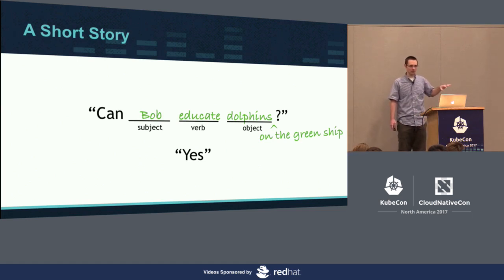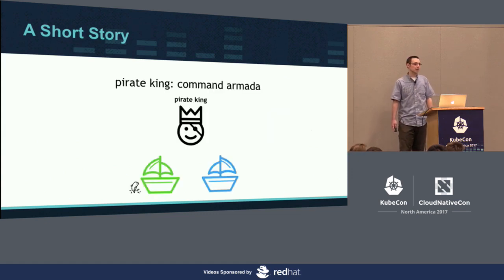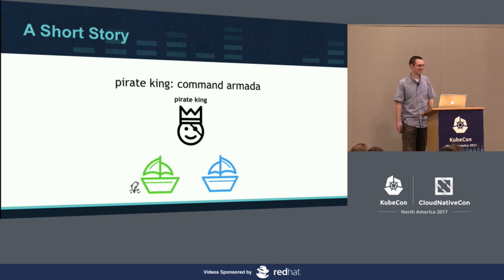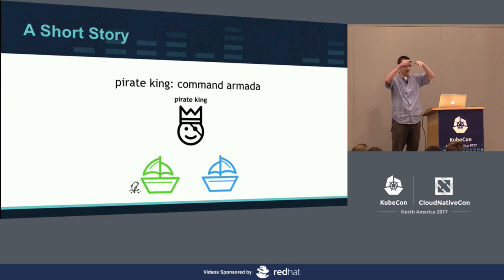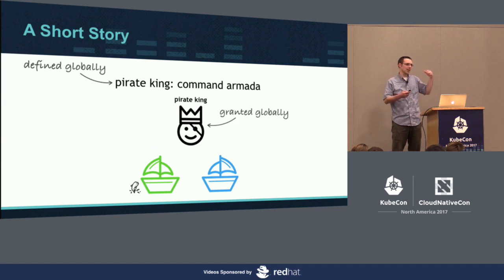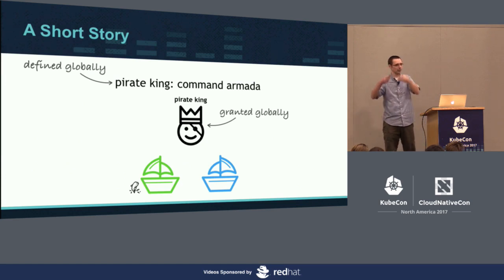We're almost done with our story, just a little post-log. Whatever happened to Bob? Turns out he got himself elected pirate king — must have been his strong sense of porpoise. This is a permission dealing with something global. The Armada is a global thing, so the role that allows it has to be global, and it also has to be granted globally. These are the ways you can think about defining roles globally or locally, and then granting them globally or locally.